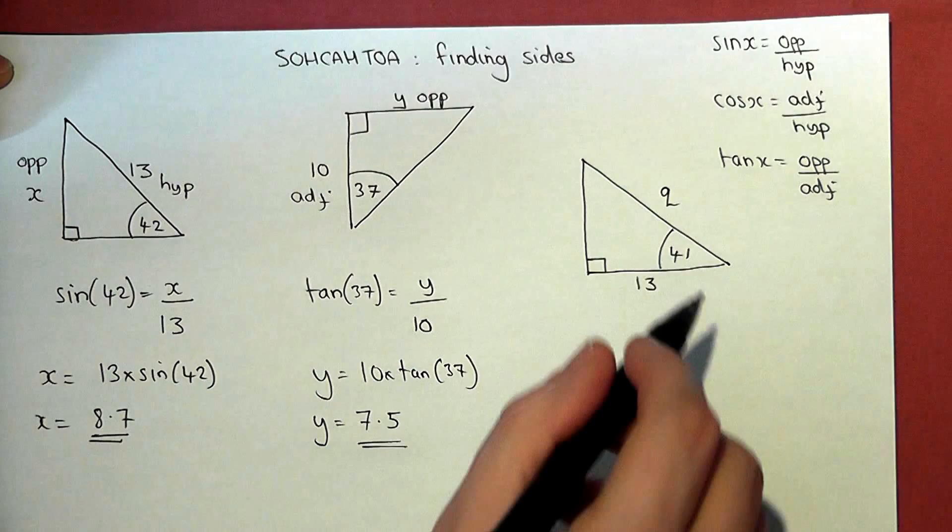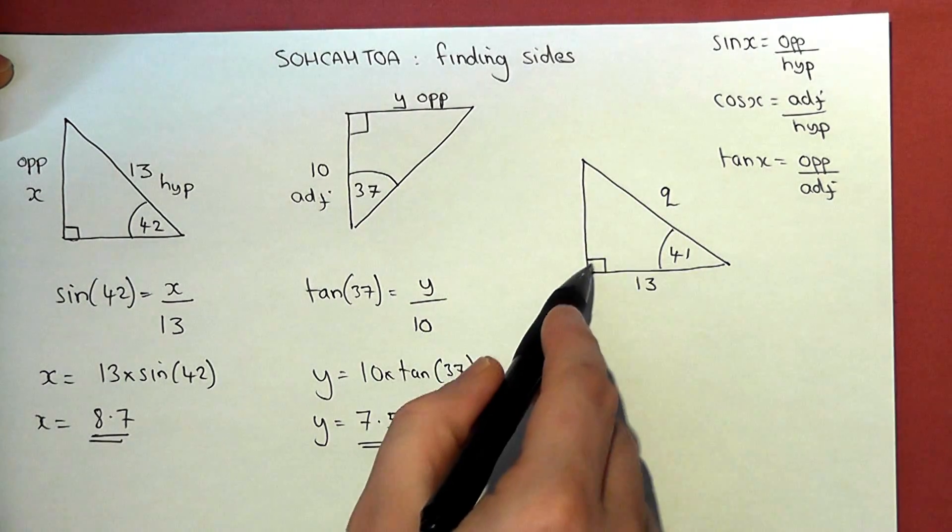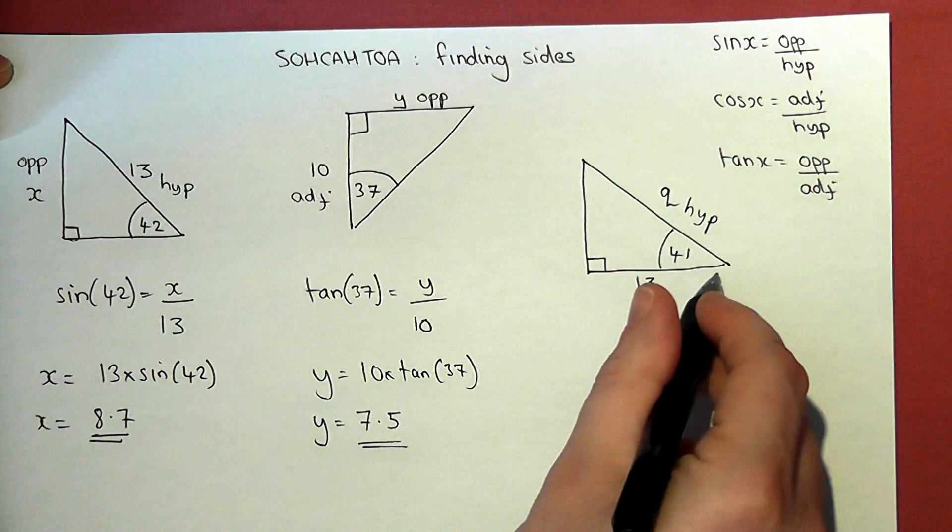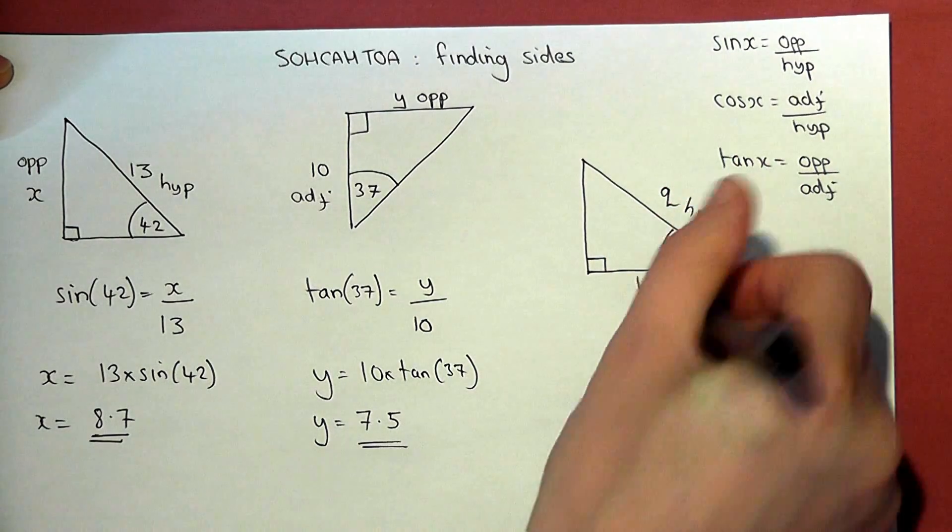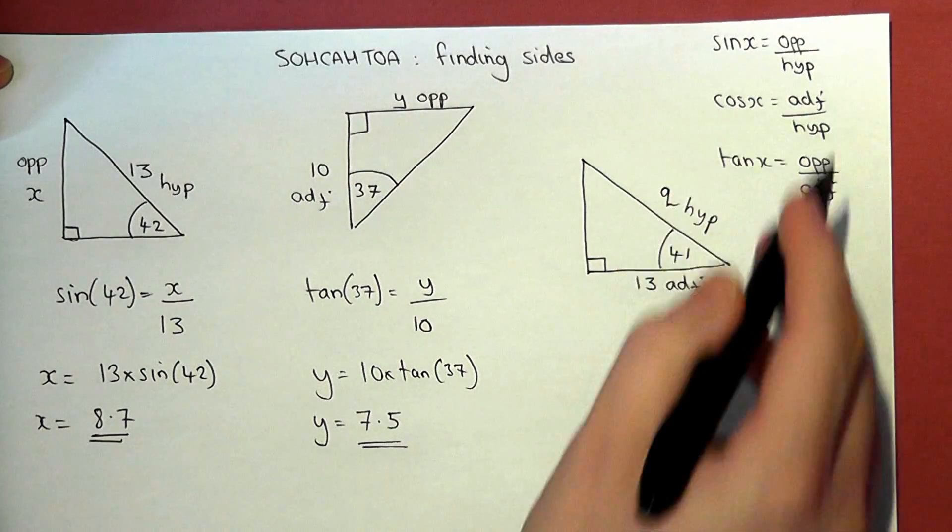Now then, the third one. Angle, known, unknown. The unknown is opposite the right angle, that is the hypotenuse. This side here is next to the angle, it is the adjacent. So adjacent hypotenuse is cos.